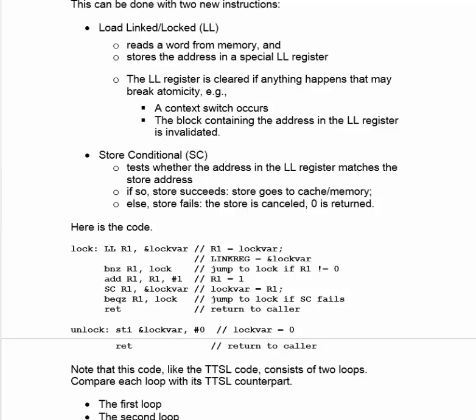We then attempt to store this 1 back into lock variable. If nothing has happened to change the value in the LL register, the store will succeed, and we execute the next instruction without branching, returning to the caller having locked the lock. On the other hand, if something happened to the lock between the Load-Linked and Store Conditional, then 0 is put in R1 and we branch back to the lock label to re-execute the code. We keep working until we know we've gotten the lock and nobody else has touched that lock variable in the interim. Unlock is trivial — just write a 0 with an ordinary write instruction to lock variable and return.